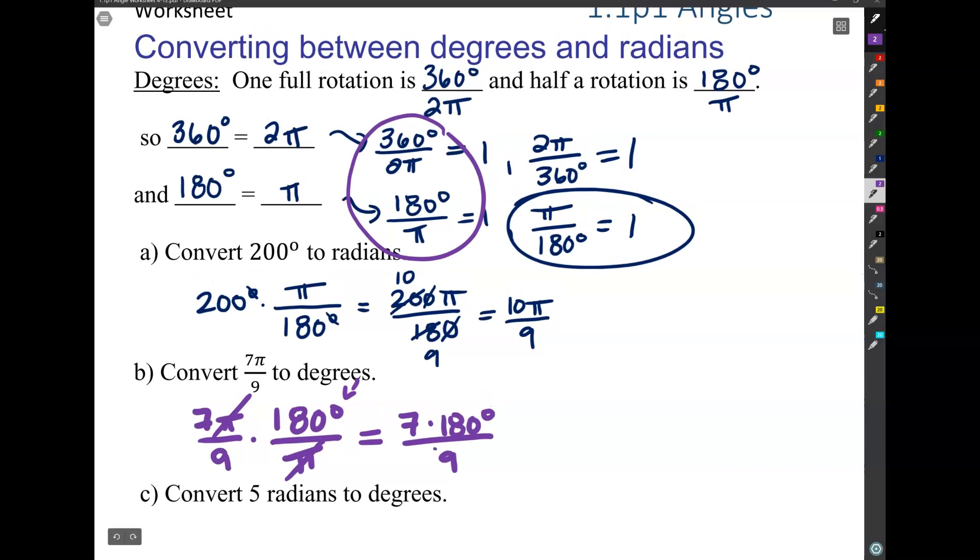Okay, so 9 should go into 180 really nicely 20 times. So now I have 7 times 20 degrees, which is 140 degrees, which is beautiful. And I will keep it just like that.